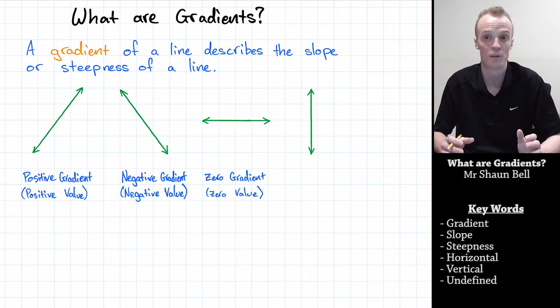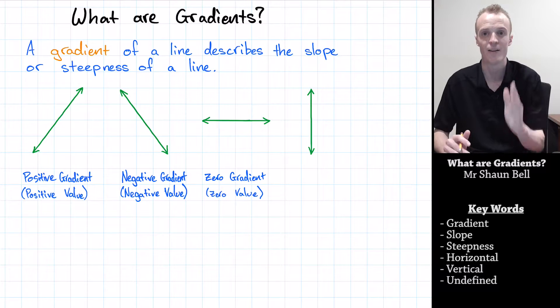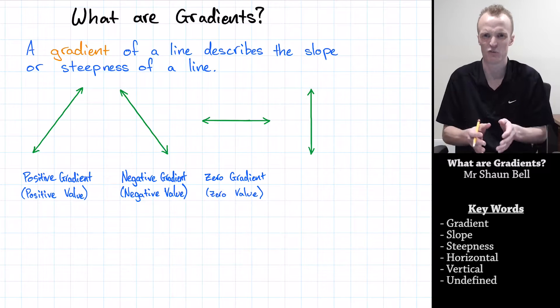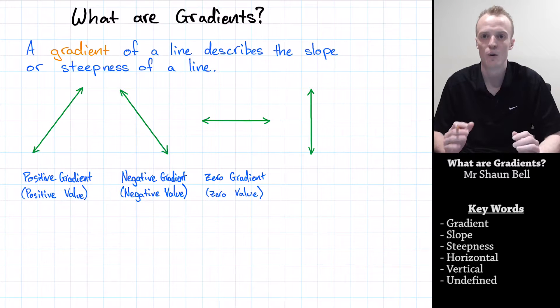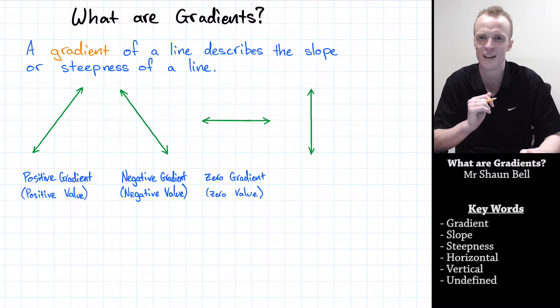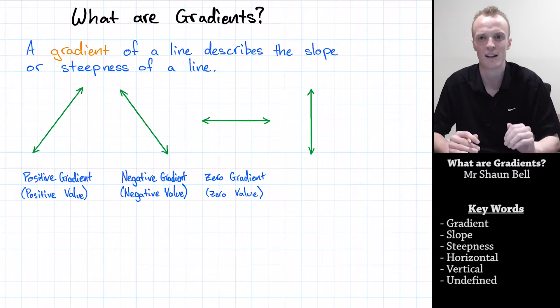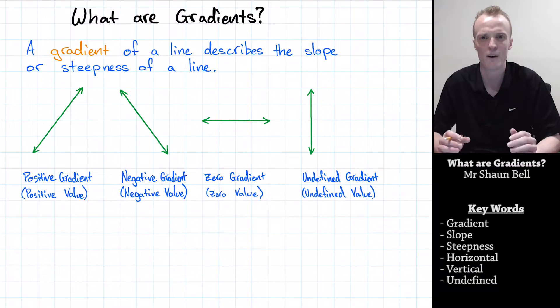The other special situation is: what if we have a vertical gradient, one that's directly up and down? We give this special case a special name. We refer to these vertical gradients as an undefined gradient, and the value that we give it is also undefined.